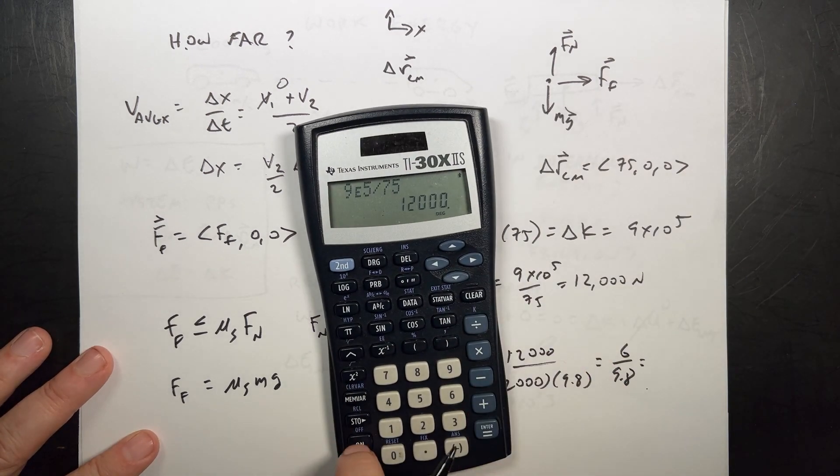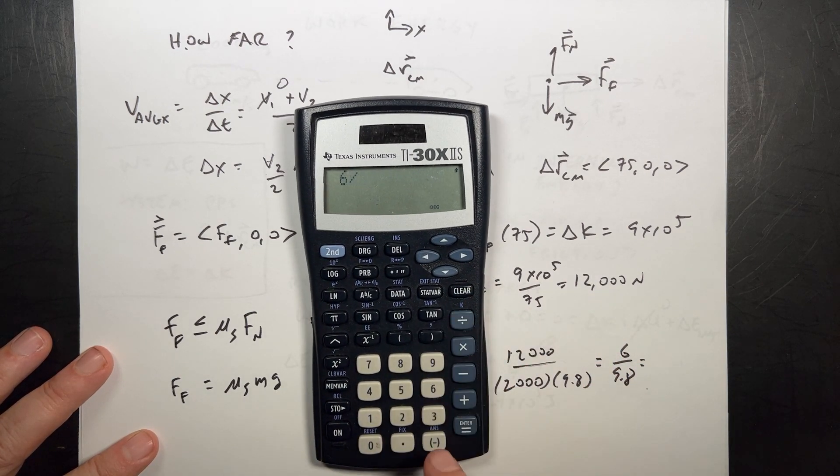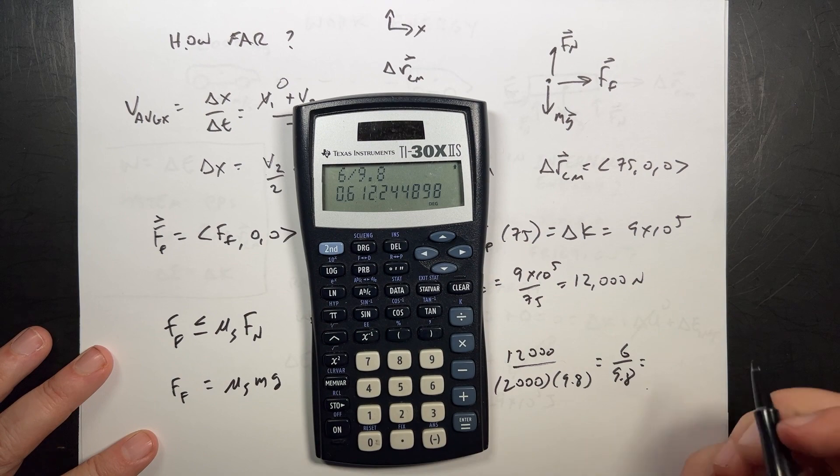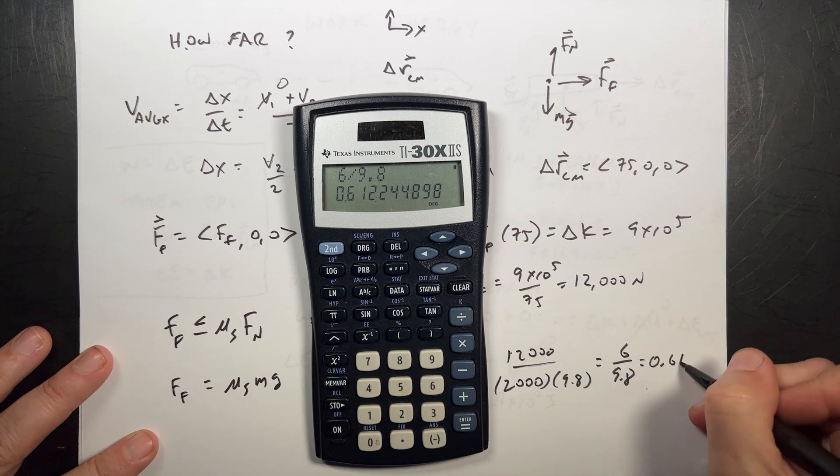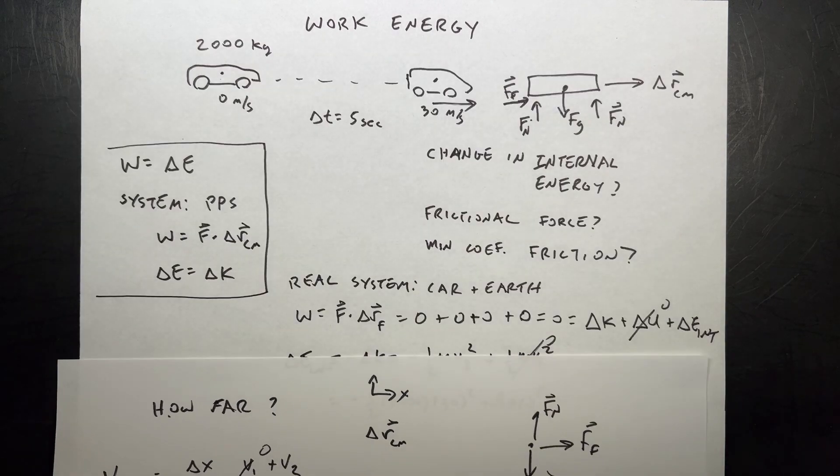Okay. I had to think for a second there. I told you, you've got to think about these things when you're making a video. It really can throw you off. 0.61. No units. And that seems like a reasonable coefficient of friction. And that's that.